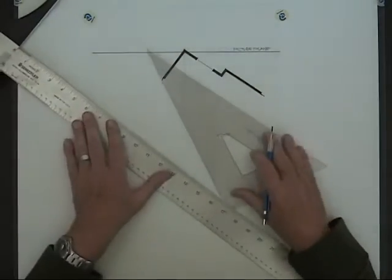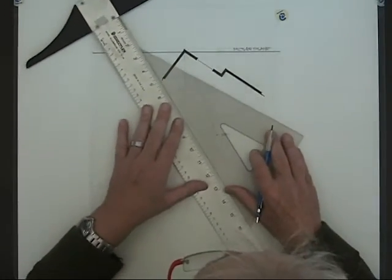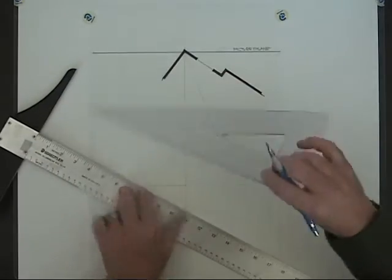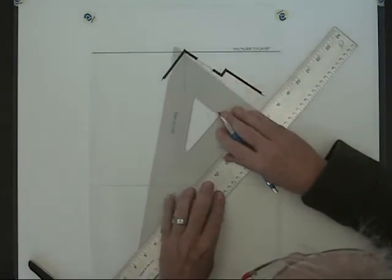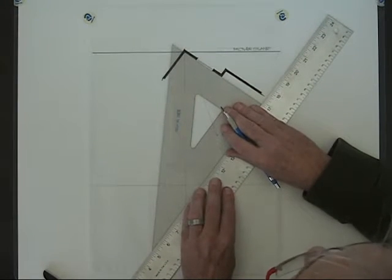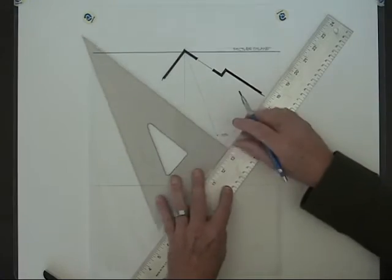Now I have to locate the vanishing point. So I want to take a line that is parallel with this rear corner, with this rear wall, and extend that up to the picture plane.